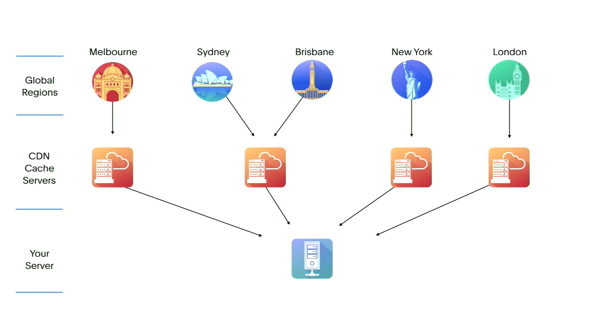If you have customers all over the world — Melbourne, Sydney, Brisbane, New York, London — a CDN service will, when visitors go to your domain, return to them the address of a local caching server. When they request an image, PDF, or web page, that local server will say it has a cached copy and serve it directly. It won't have to go all the way back to your origin server, but if it doesn't have a cached copy it fetches, caches, and delivers the content. It's a distributed caching network.